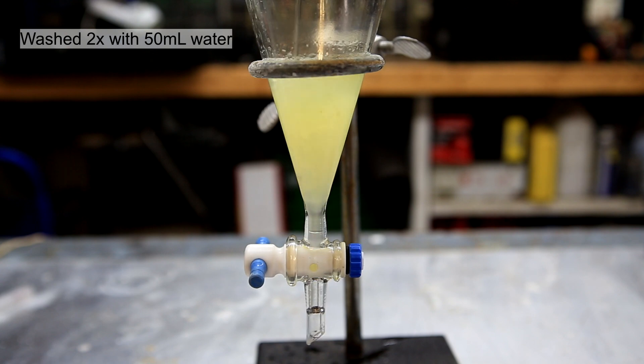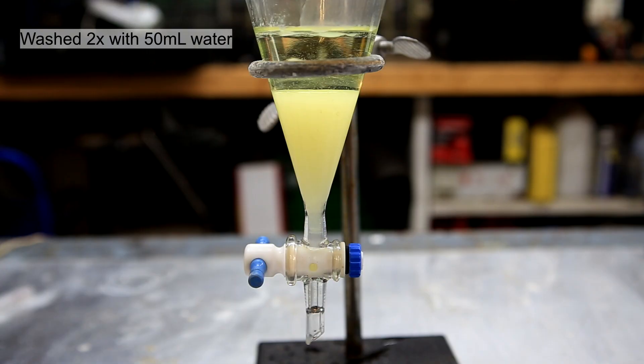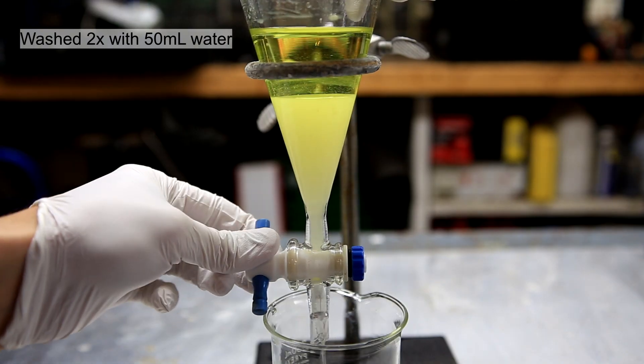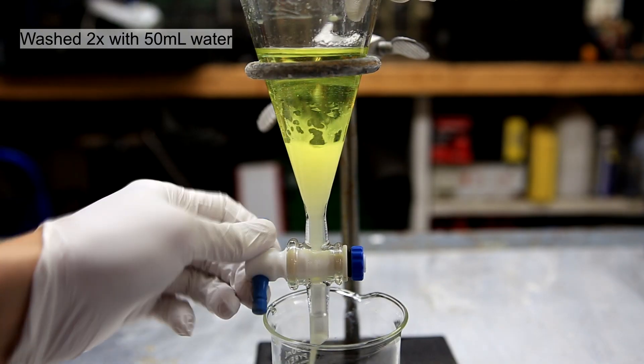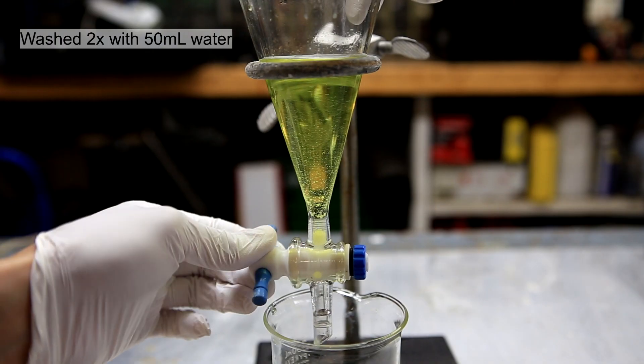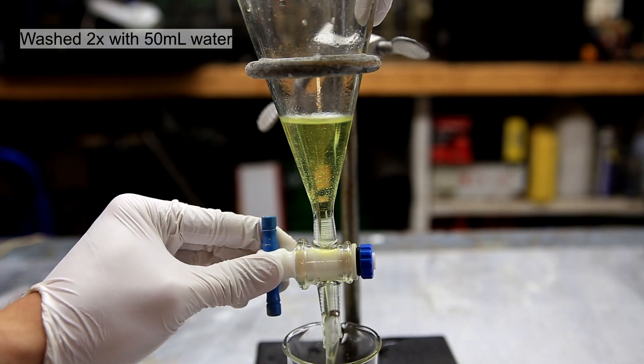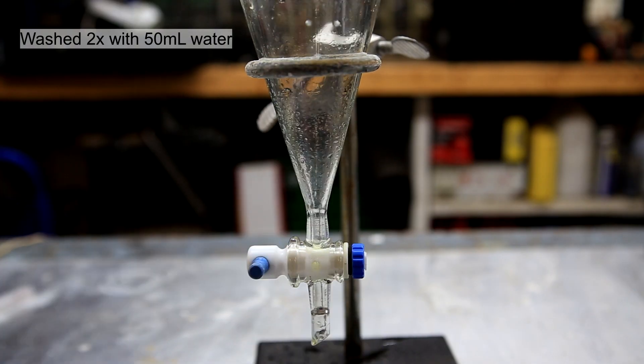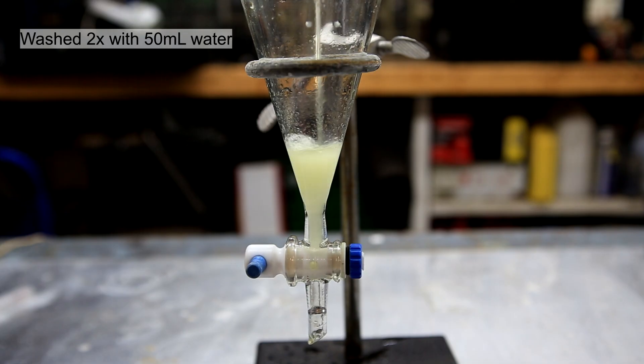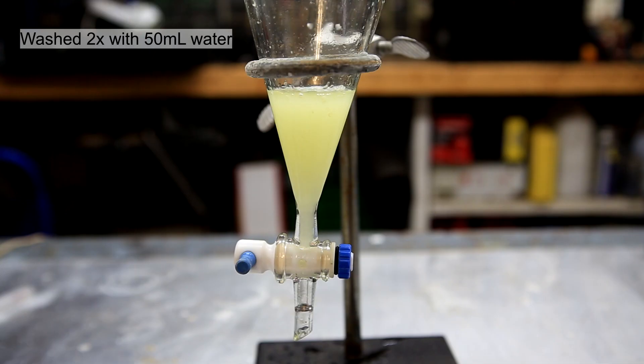The upper layer containing the nitrobenzene is washed twice with 50 milliliters of distilled water. Washing it with water allows for the removal of any acid that might remain in the nitrobenzene. Nitrobenzene is denser than water so it becomes the lower layer and this is the layer that should be retained. The nitrobenzene is slightly soluble in water so the water does become a faint yellow color. Because there are trace amounts of the nitrobenzene in the water, it's important that the water is disposed of correctly because nitrobenzene is actually quite toxic.